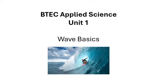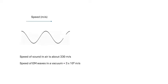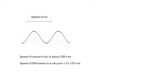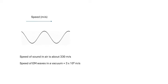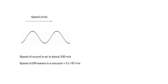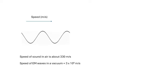BTec Applied Science, Unit One: wave basics — a bit of revision of GCSE stuff, fundamental things you need to know about waves. There's a wave traveling from left to right. The speed of a wave is how fast the wave travels in meters per second. The speed of sound in air is about 330 meters per second — in one second it travels 330 meters.